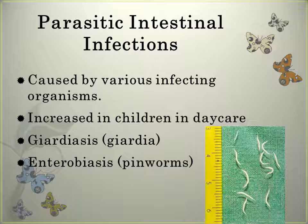Parasitic infections are the most frequent infection in the world. Intestinal infections caused by parasites are increased in the United States, especially in children in daycare. The two most common are giardiasis and pinworms. Treat giardiasis with antibiotics, appropriate sanitation, and avoid swimming in stagnant water. With pinworms, an antiparasitic medication is given and the entire family should be treated, along with appropriate sanitation.